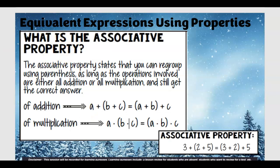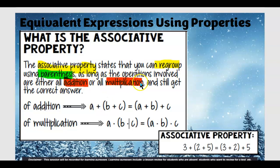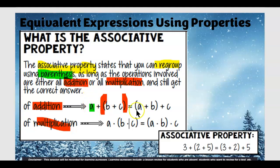Associative property, more academically stated: you can regroup the parentheses as long as the operations involved are either addition or multiplication, and you'll still get the correct answer. All they did was move the parentheses — the letters are still in the same places. A is still where A is, B is still where B is, and C is still where C is.